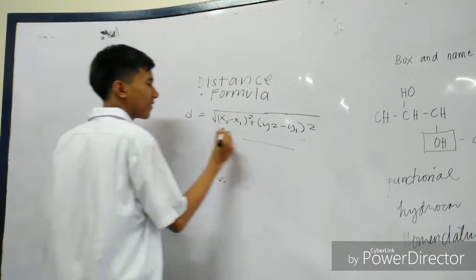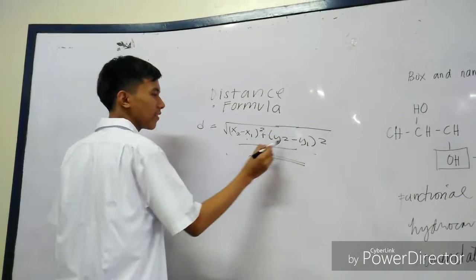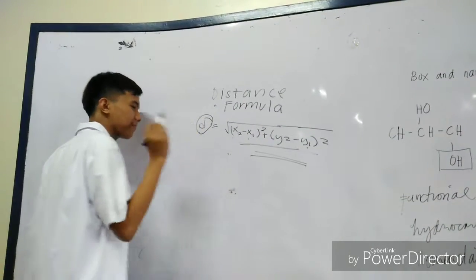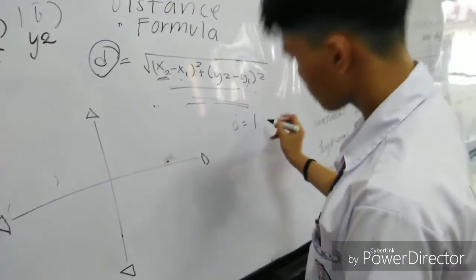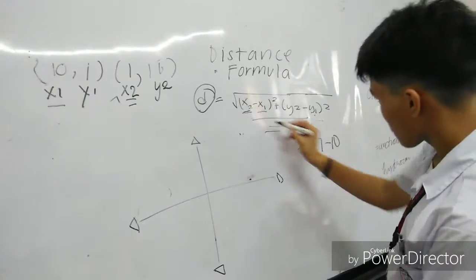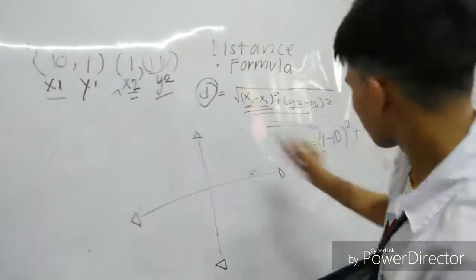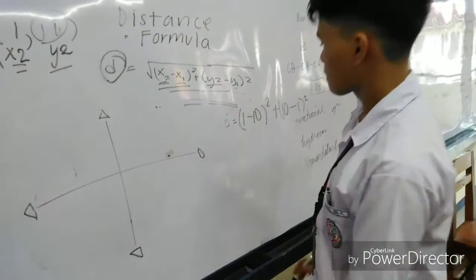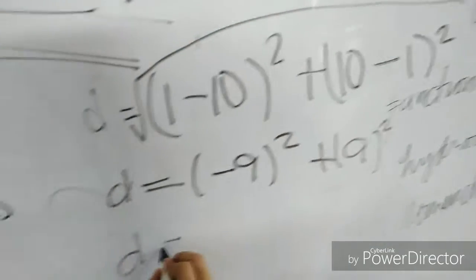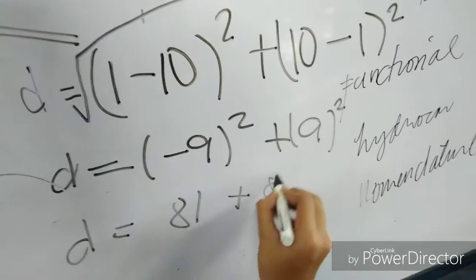For the distance in a line segment, our formula is D = √((X₂ − X₁)² + (Y₂ − Y₁)²). For our problem, we have the points (10, 1) and (1, 10). We substitute the given values into the formula: D = √((1 − 10)² + (10 − 1)²). Simplifying, we get (−9)² and 9², which gives us 81 plus 81, then we add them to get 162.